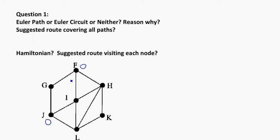So I see there's exactly two odd nodes, so I know that it's going to be an Euler path. And my reason for this is that there's exactly two odd nodes. So if I'm going to suggest a route that covers all of the paths to complete this circuit, or traverse all the possibilities in this circuit,